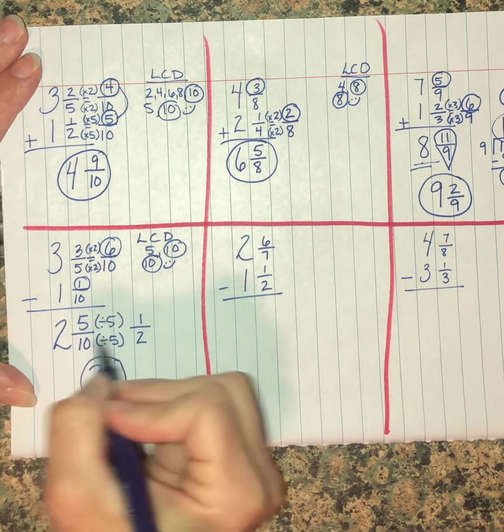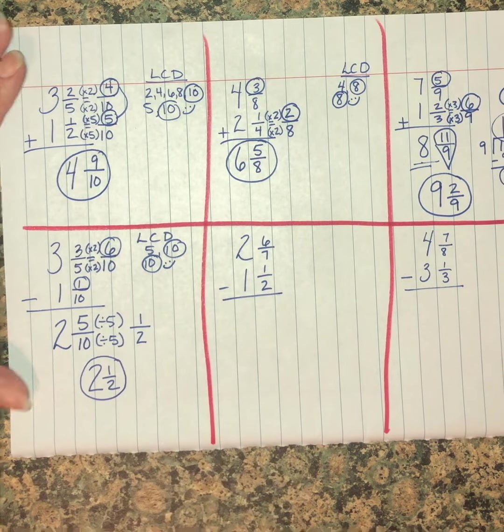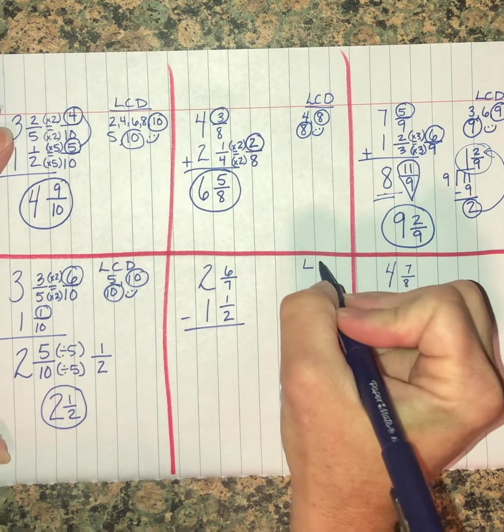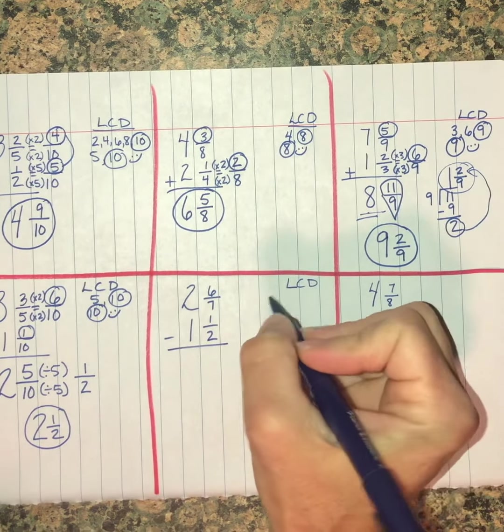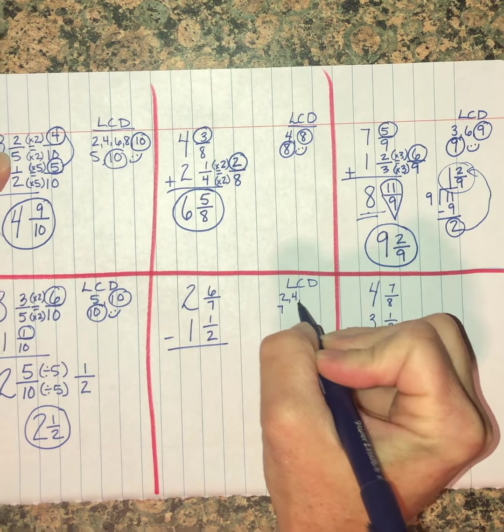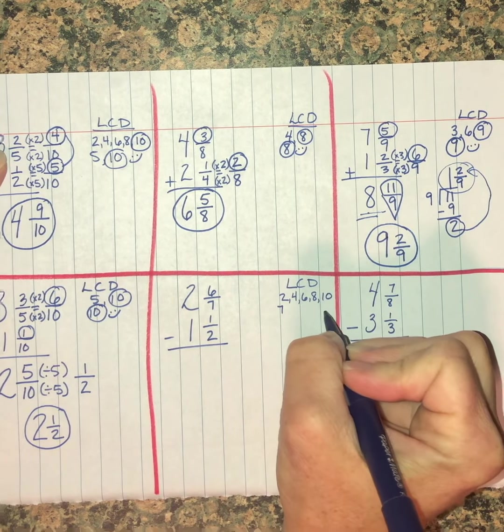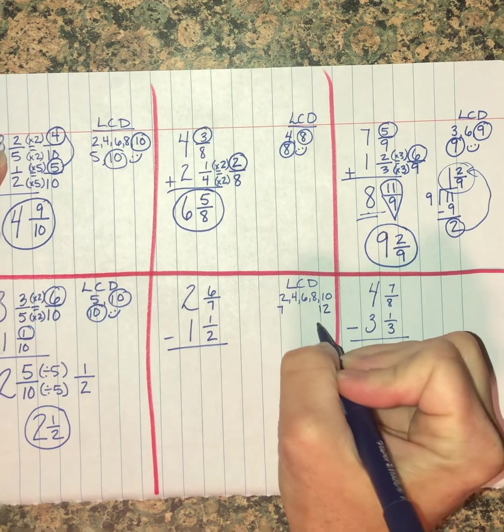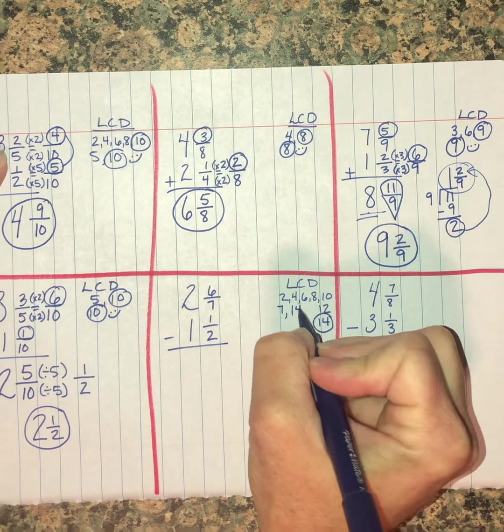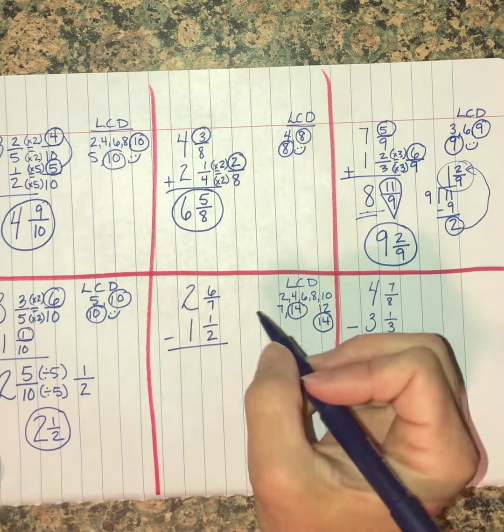Really, after you do this for a while, you won't need to write this out here in the middle, but this is going to help you get there if you're getting stuck along the way. This one, I'm going to look for my LCD between two and seven. Two, four, six, eight, ten, I'm going to run out of room, twelve, fourteen. I'm going to stop because that's the only one I'm going to have in common on this page without running way down the road.